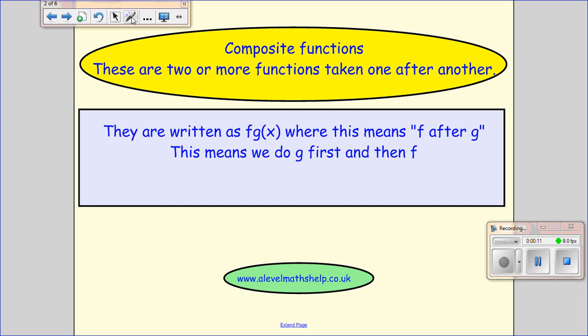Now the key thing of this is knowing which way round to do them and I like to think of them as this is f acting on g of x, which means that g of x is going to become our input for f. So first of all we must do g first and then we do f.